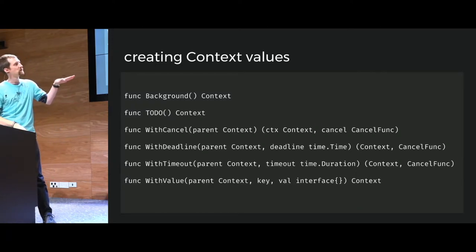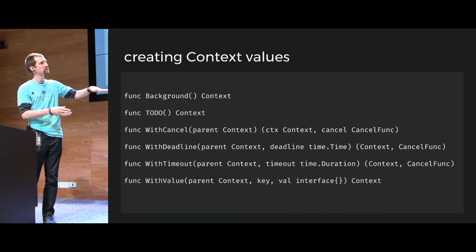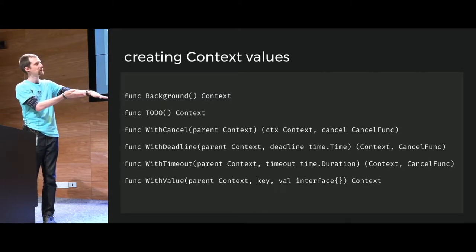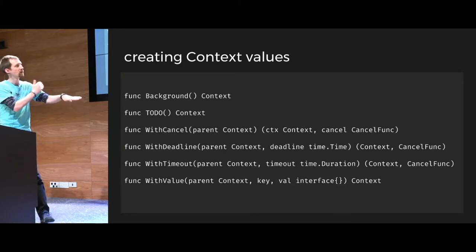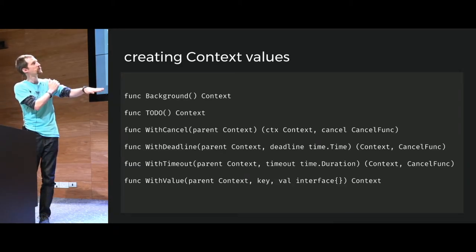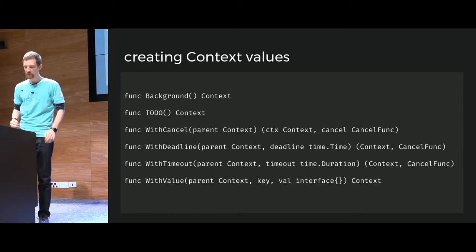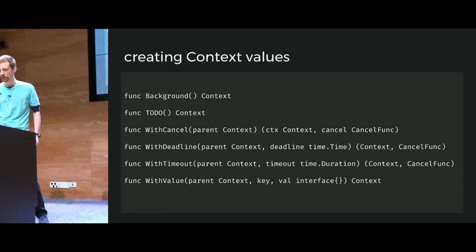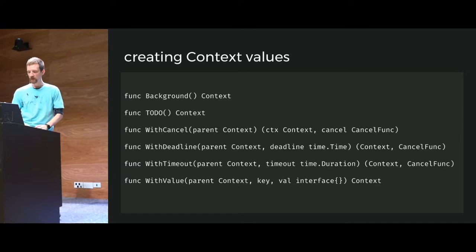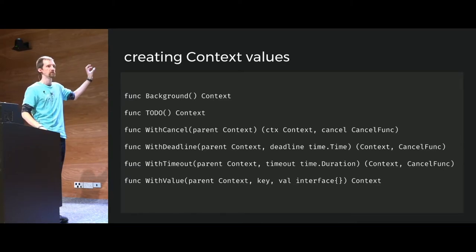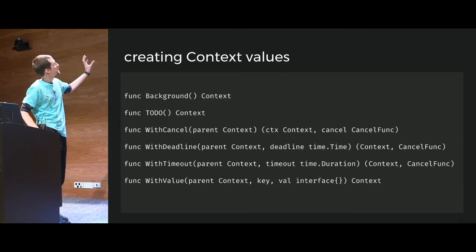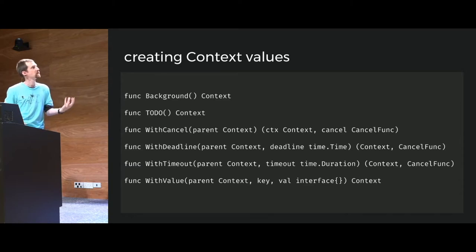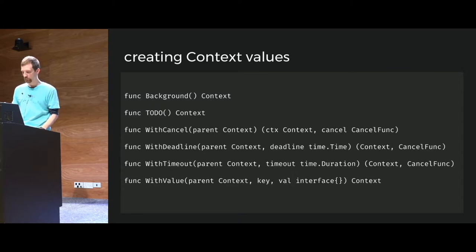If one individual request times out or becomes done, then all of the parent contexts that depend on it will also become done. So you can cancel the whole request back to the client. We call it the background context because it's essentially the root of that tree. When you call background(), it returns a single instance — a global context used inside your Go program.